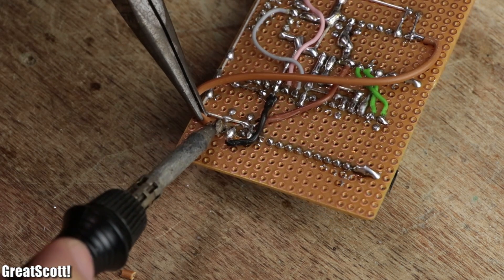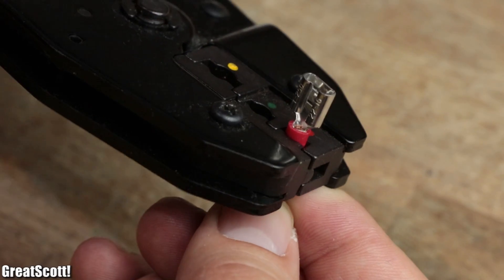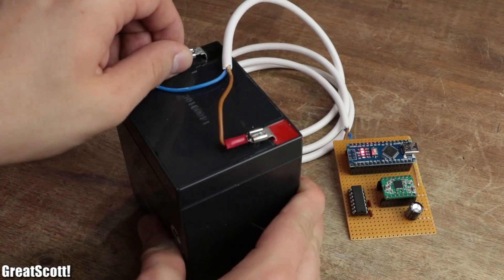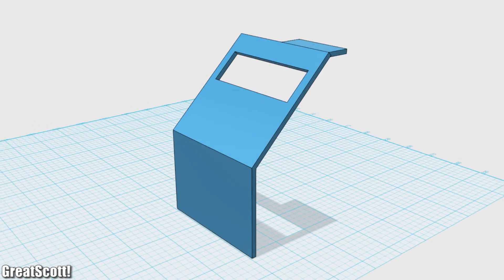After the circuit was complete, I added a thicker wire with cable shoes to the VIN pin of the Arduino for the battery and used the OneTwoThree-3D design software to create a mounting for the electronics.